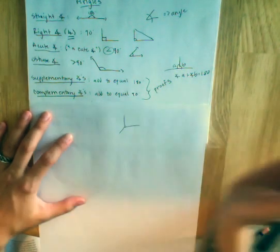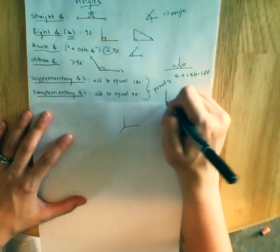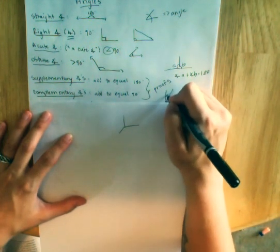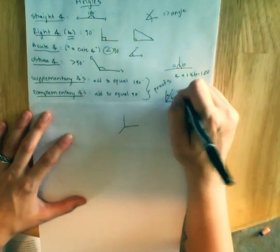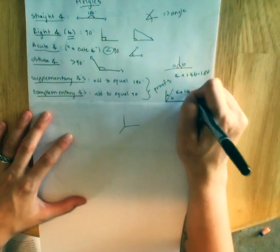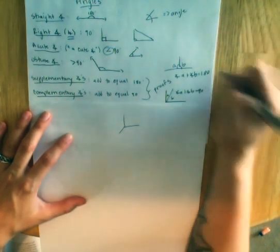Complementary angles add to equal 90. If we had these two angles, this was A and B. Angle A plus angle B would equal 90.